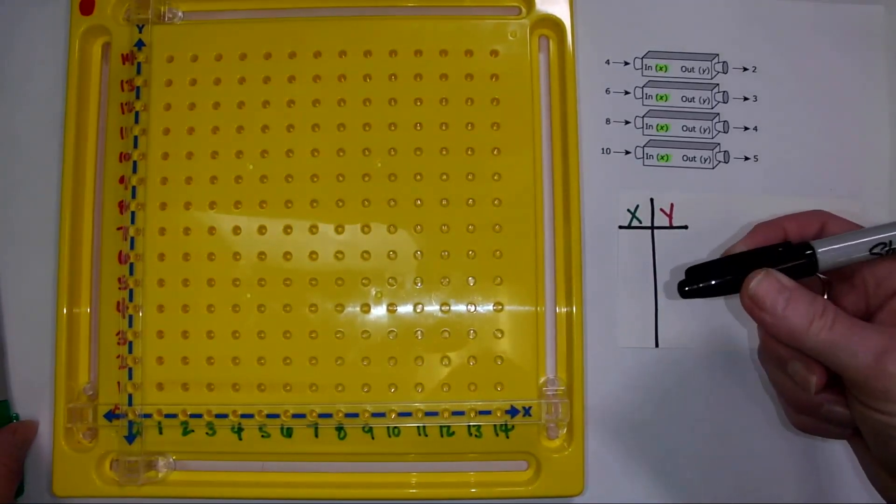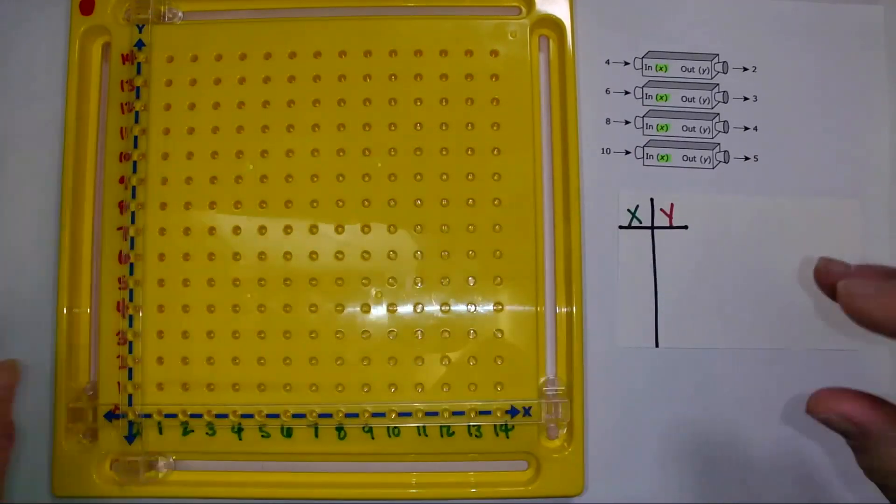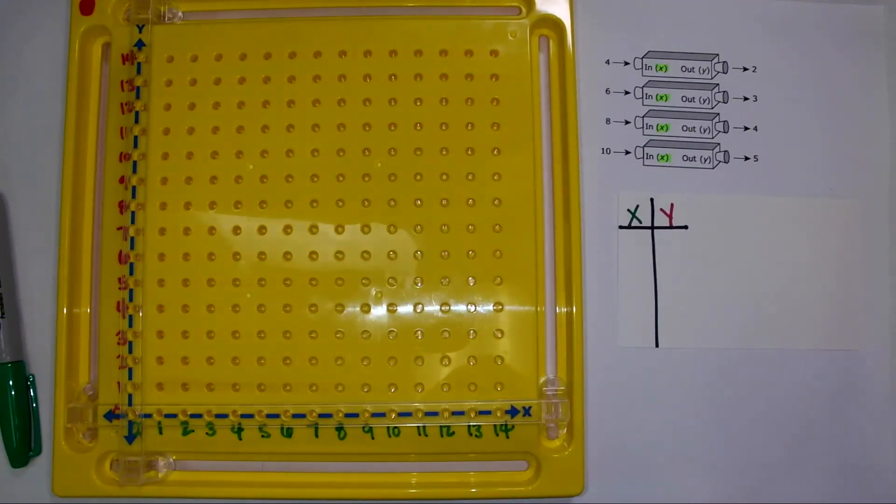So we know there's a first that matches my green x in my input-output table here. You can have them all in one color or they can write the x's in greens and the y's in red. I'm going to just do it in one color.